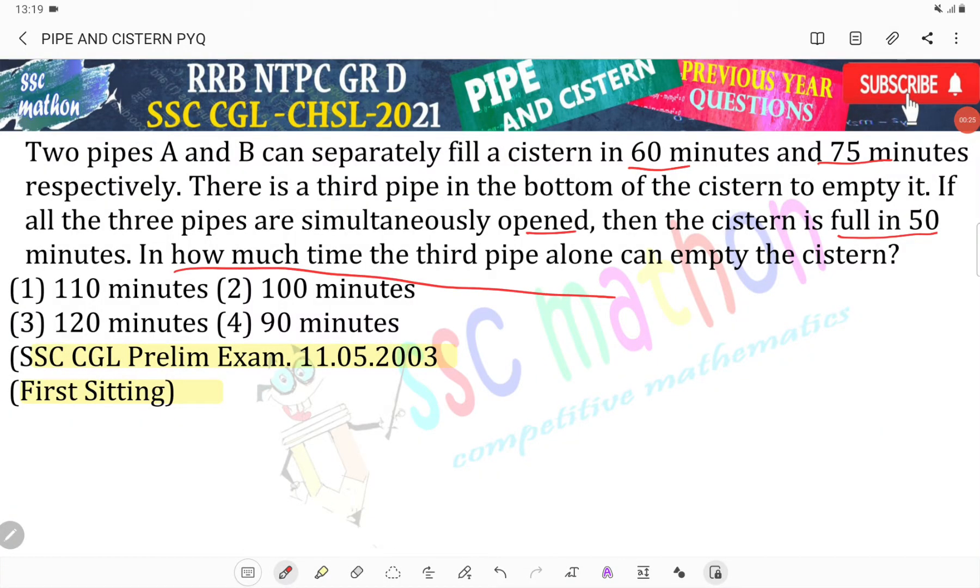In how much time the third pipe alone can empty the cistern? Now sir, pipe A can fill the cistern in 60 minutes. Pipe B can fill the cistern in 75 minutes.